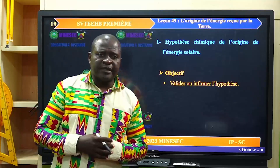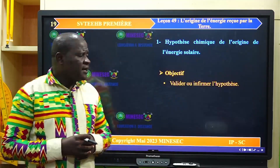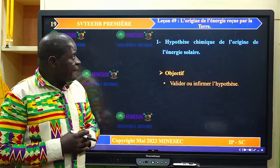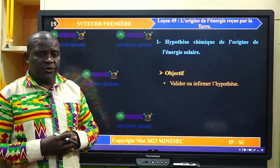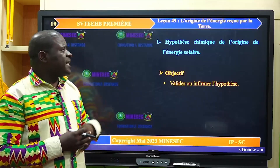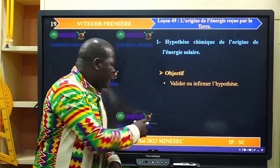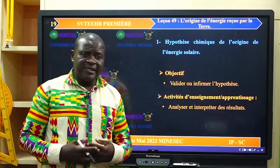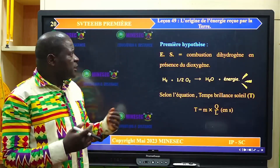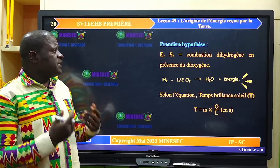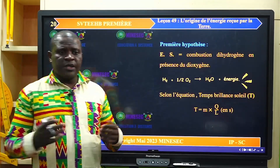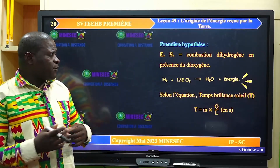Commençons par la première hypothèse sur cette origine de l'énergie solaire : l'hypothèse chimique. À la fin de cette partie, il sera question de valider ou de rejeter l'hypothèse chimique de l'origine de l'énergie solaire. Nous allons analyser et interpréter des résultats. La première hypothèse chimique dit que l'énergie solaire proviendrait de la combustion du dihydrogène en présence du dioxygène selon l'équation : H2 + 1,5 O2 → H2O avec production d'énergie.